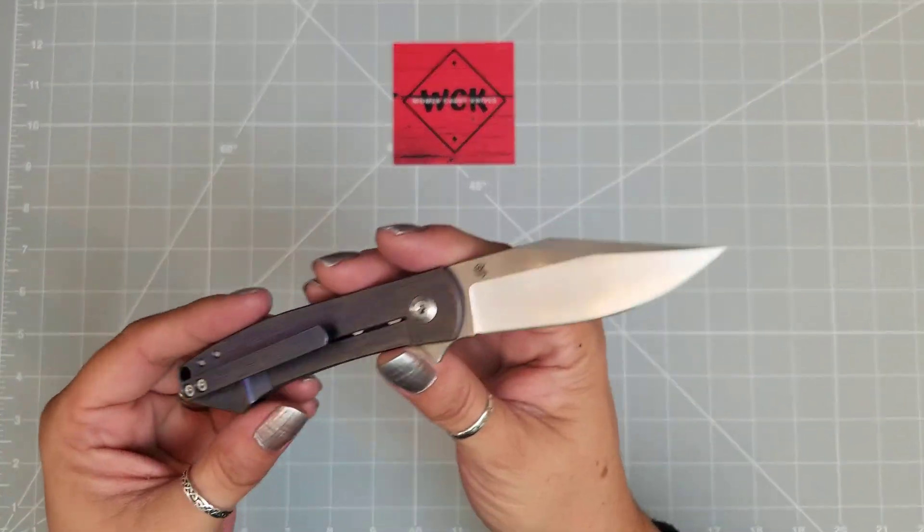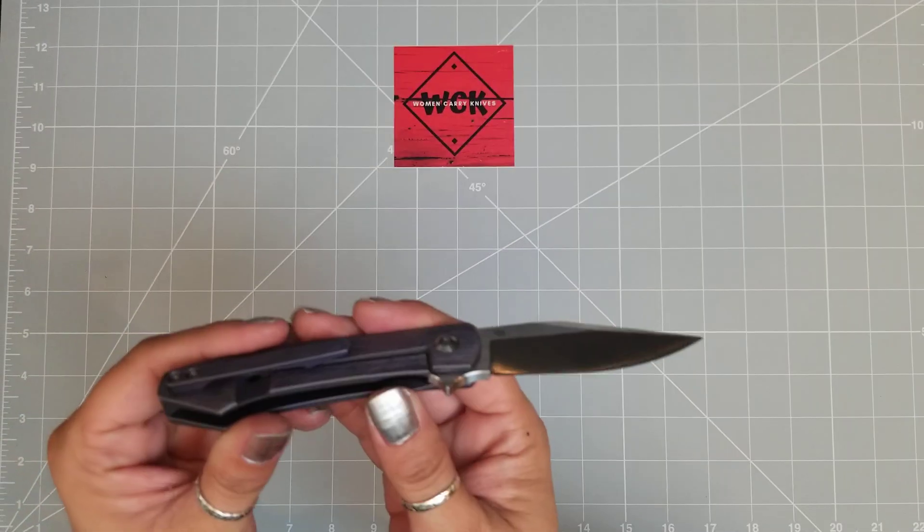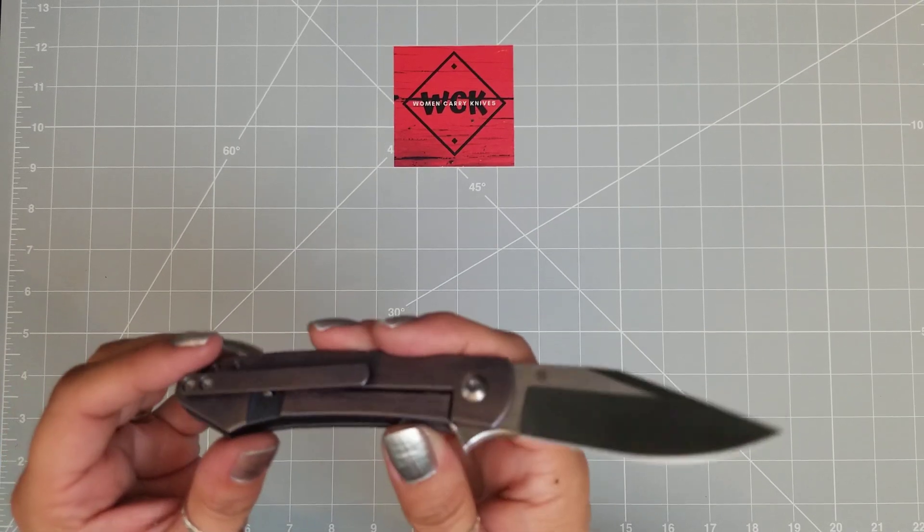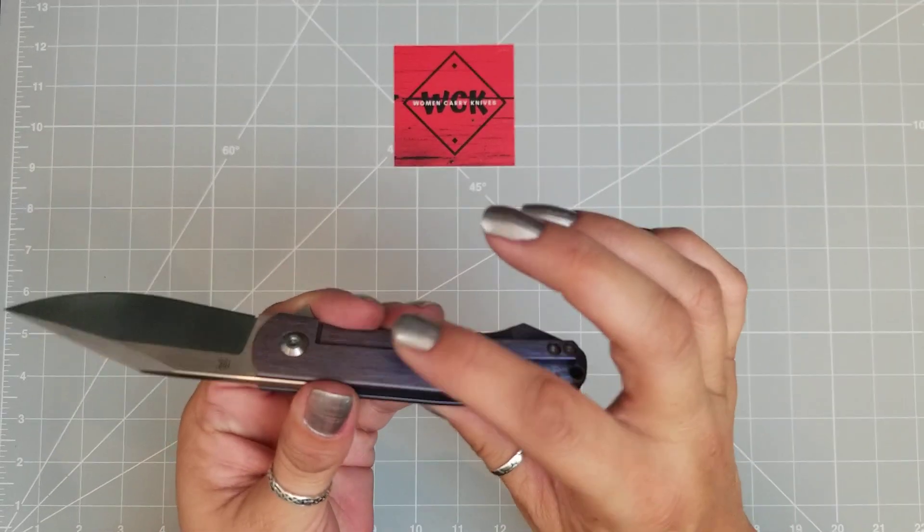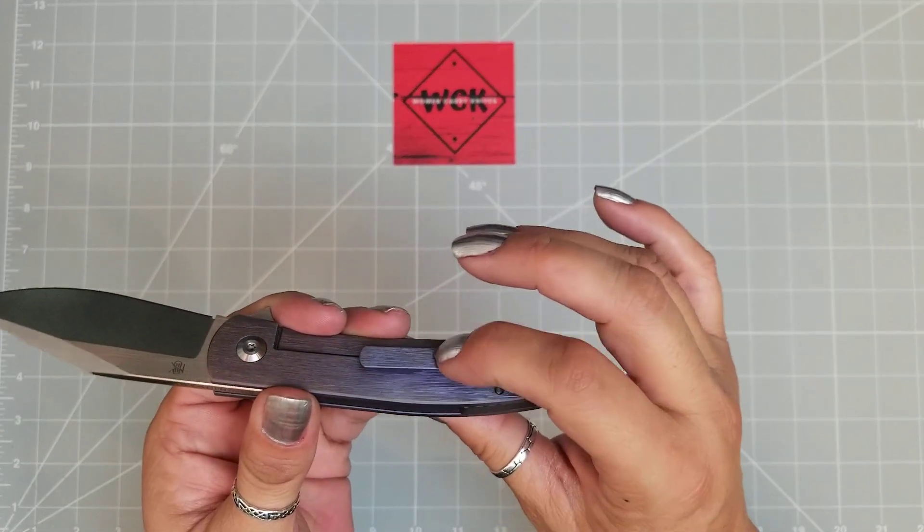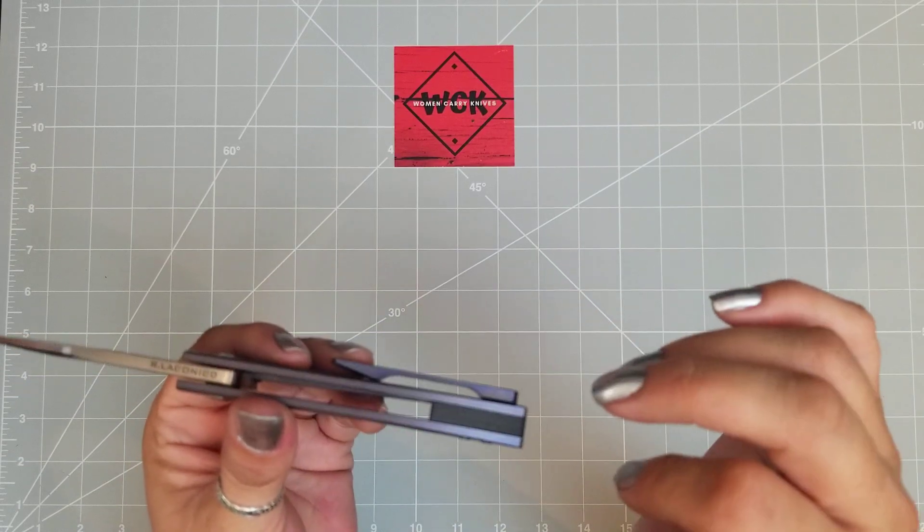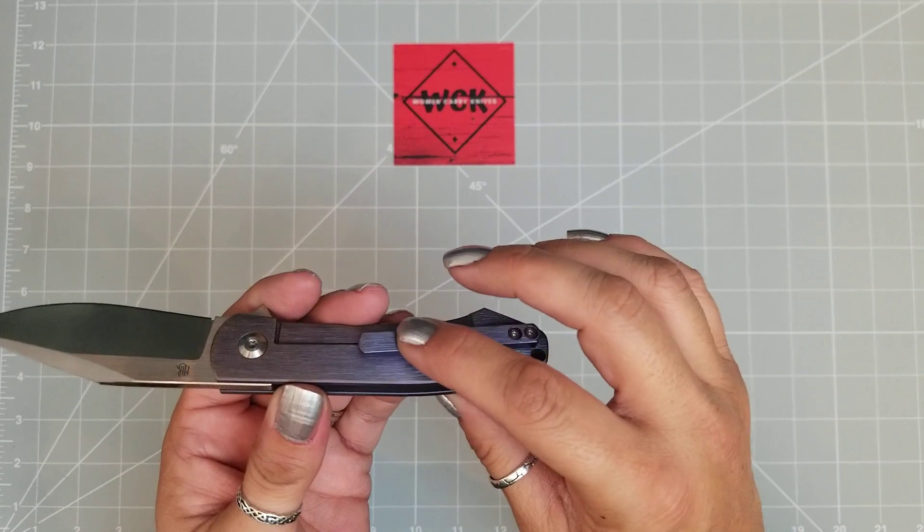On the frame lock side, beautiful frame lock. You also have this very low-profile milled pocket clip. And I have to tell you, when I first saw this clip I thought I'm not going to like it. I have been carrying this one around off and on since I got it, and since we got back from Blade Show. And I have to tell you that the pocket clip is just great.